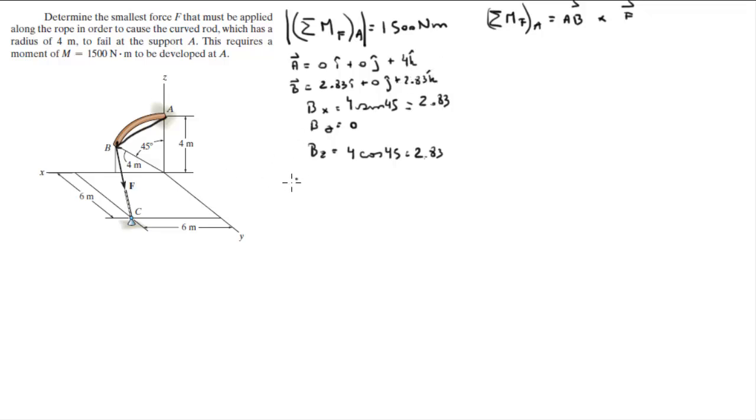And point C is another point that's involved and it sits at 6i plus 6j plus 0k. So we need to find the vector that goes from A to B. That is given by B minus A and it comes out to be 2.83 in the i plus 0 in the j minus 1.17 in the k.